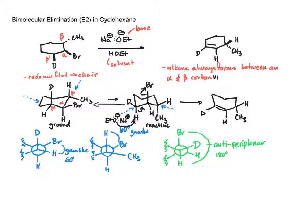To review, this has been a bimolecular elimination in a cyclohexane system in which we converted the flat cyclohexane into the chair. We did a ring flip to get the correct dihedral angle to do the E2 elimination, and we see that the alkene forms between the alpha and beta carbons.